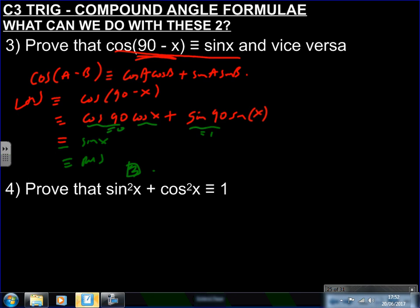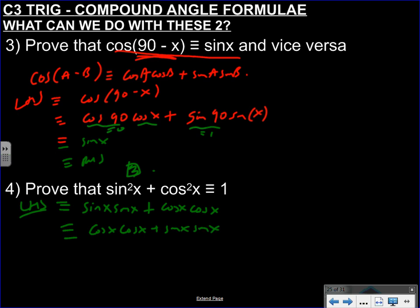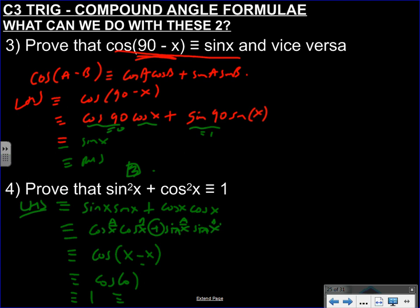Finally, prove that sin²x plus cos²x equals 1. This looks tricky, but sin²x is sinx times sinx, and we add cosx times cosx. Rearranging, this looks exactly like our addition formula - cos-cos plus sine-sine. So this is the same as cos(x - x) with a plus sign on the sine-sine term. cos(x - x) = cos0 = 1. Therefore sin²x + cos²x = 1, as required.